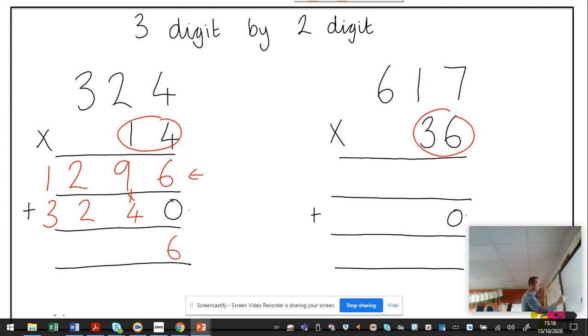Six add zero is six. Nine add four is 13. Two add two add one is five. Three add one is four.